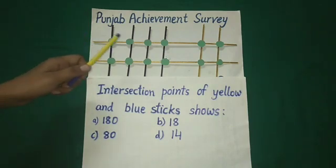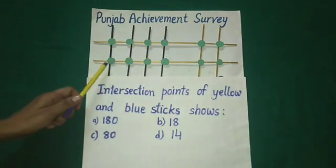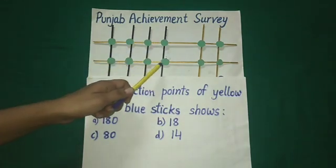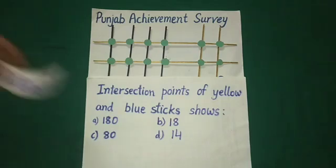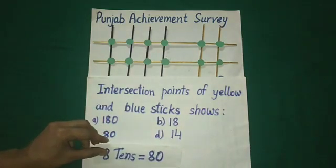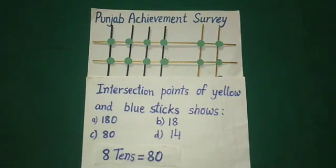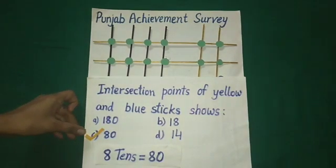Each intersection point of blue and yellow stick shows 1 ten. Let's count these intersection points: 1, 2, 3, 4, 5, 6, 7, 8 — that is 8 tens. And we know 8 tens is equal to 80. So the right option is option C, 80.